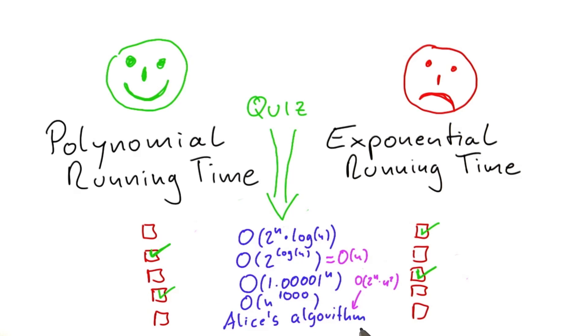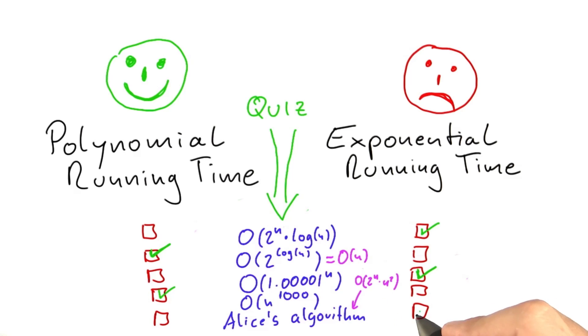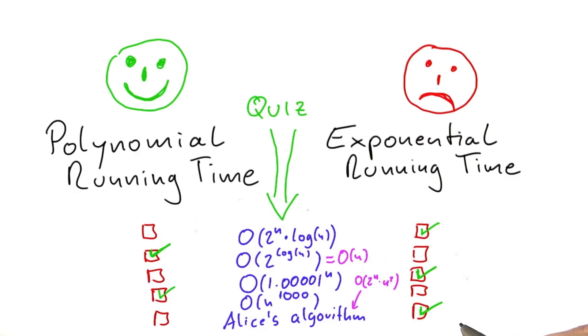Alice's algorithm — you already figured that out because it's 2 to the power of n times n squared. That's an exponential running time algorithm, that's why it's really bad.